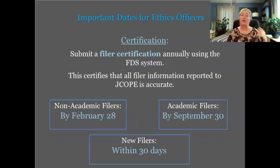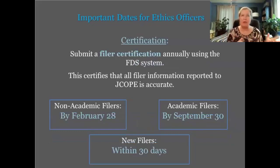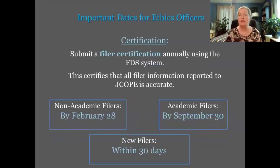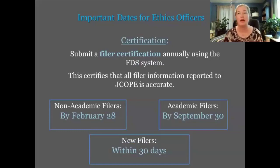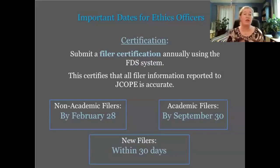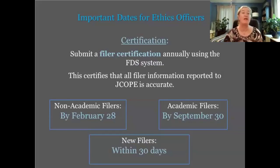For non-academic filers, certification happens by the end of February; for academic filers, by the end of September. By one of those dates, ethics officers and agency contacts must have reviewed, updated, and certified your agency's list of active filers. By submitting that certification, you are vouching for the accuracy of the list and agreeing to update any changes within 30 days of the date of change. The commission absolutely relies on this list to manage FDS compliance. Please pay close attention to this task — it is the foundation of the whole system.